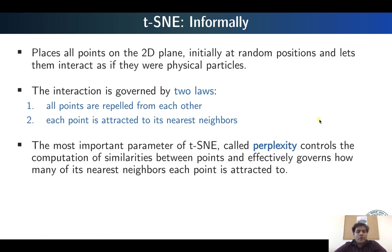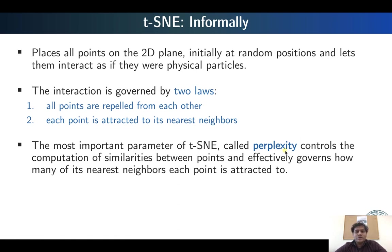One of the most important parameters of T-SNE is known as perplexity. This perplexity parameter controls the computation of the similarities between the points. In T-SNE we compute similarity between points both in the high dimensional and low dimensional space, and this computation of similarities is governed by this perplexity parameter. Essentially, the perplexity parameter also governs the number of nearest neighbors of a particular point or cell.